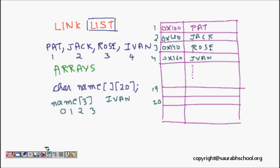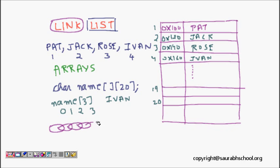So why do we need a linked list if arrays already work? Rose asks this question. To understand, let's look at the word 'link.' A link is like a chain — something that joins two things together, like links in a chain or hyperlinks on web pages.